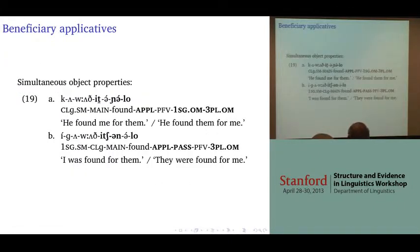We find the expected simultaneous object properties: 19a with two object markers and 19b with an object marker and passivization.